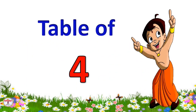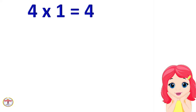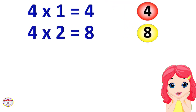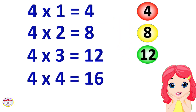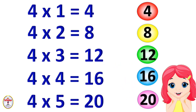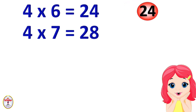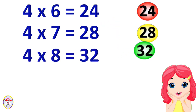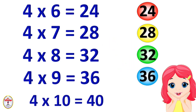Table of 4. 4×1=4, 4×2=8, 4×3=12, 4×4=16, 4×5=20, 4×6=24, 4×7=28, 4×8=32, 4×9=36, 4×10=40.